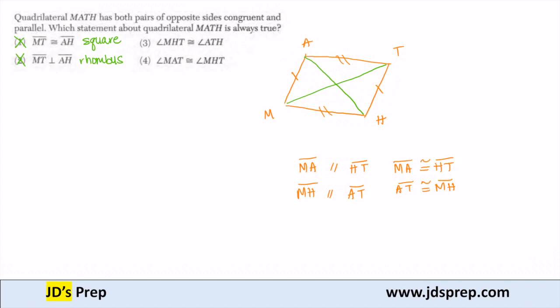So now my only options are three and four. For three, this is giving me a relationship between the adjacent angles. The fact that angle MHT, let me get a different color here. So MHT, which is here, they're saying that it's congruent to ATH, right? Which is here.